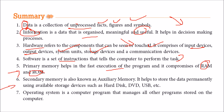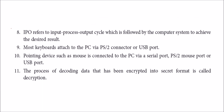Secondary memory, also called auxiliary memory, helps in storing data permanently using storage devices like the hard disk, DVD, and USB. The operating system is the computer program that manages all other programs stored in the computer. The IPO — Input, Process, Output — cycle is followed by every system. You must provide proper inputs because it follows the principle of garbage in, garbage out: proper inputs yield proper results.